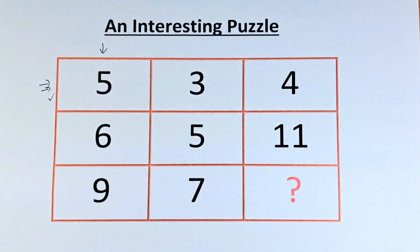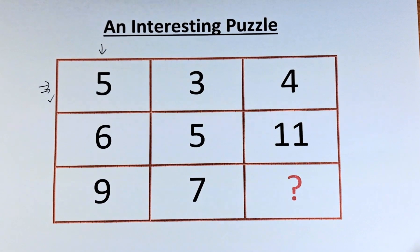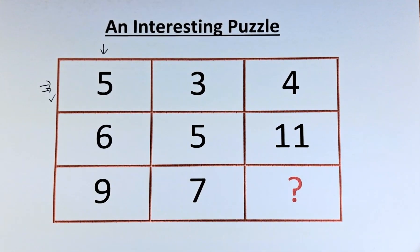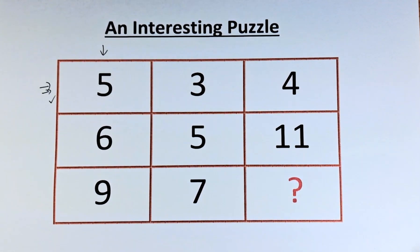So this is the correct way. So 5, 3 equals 4. 6, 5 equals 11. And 9, 7 equals the question mark. Without further ado,